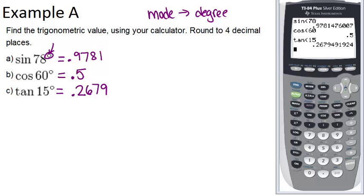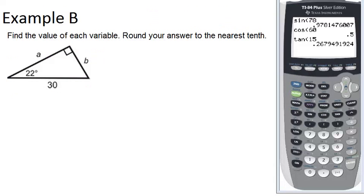Alright, let's go to example B. In example B, it says find the value of each variable, round your answer to the nearest tenth. So we have a 22 degree angle right triangle, and we know from the 22 degree angle, B is the opposite side, 30 is the hypotenuse, and A is the adjacent side. So what you always want to do first is label your sides. You might also want to write SOH CAH TOA on your paper so that you'll remember what the ratios are.